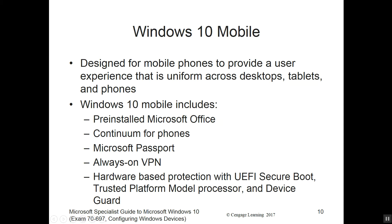Win 10 Mobile is designed for mobile phones to provide a user experience that is uniform across desktops, tablets, and phones. Win 10 Mobile includes pre-installed Microsoft Office, Continuum for phones, Microsoft Passport, Always-On VPN, and hardware-based protection with UEFI Secure Boot, Trusted Platform Module Processor, and Device Guard.